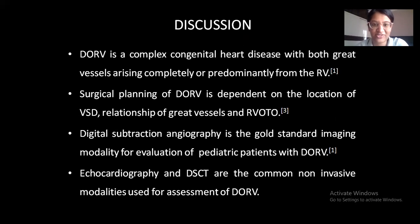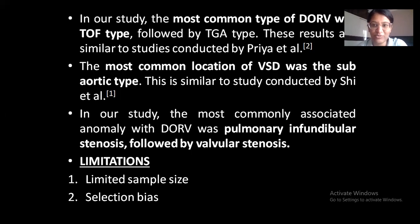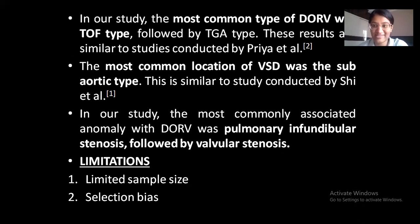Discussion: DORV is a complex congenital heart disease with both great vessels arising completely or predominantly from the right ventricle. Surgical planning of DORV is dependent on the location of VSD, the relationship of great vessels to the VSD, and presence or absence of right ventricular outflow tract obstruction. Digital subtraction angiography is the gold standard imaging modality for evaluation of pediatric patients with DORV. Echocardiography and dual source CT are the common non-invasive modalities used. In our study, the most common type of DORV was the TOF type followed by the TGA type, similar to studies by Priya et al. The most common location of VSD was the sub-aortic type, similar to the study by Shi et al. The most commonly associated anomaly was pulmonary infundibular stenosis followed by valvular stenosis. Our study was limited by limited sample size and selection bias.